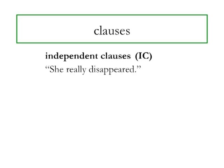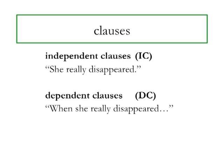A dependent clause still has a subject-verb pair, but it does not express a complete thought and it cannot be a sentence. Often, a dependent clause is marked by a subordinator. For example: 'When she really disappeared.' What happened when she disappeared? The thought is incomplete and it can't stand on its own. 'When' is a common subordinator, but there are many others.